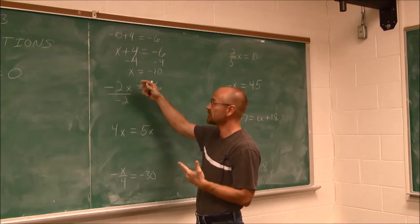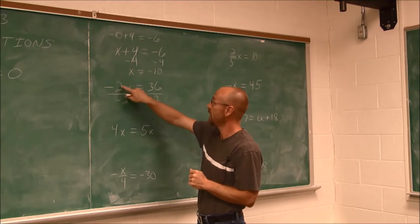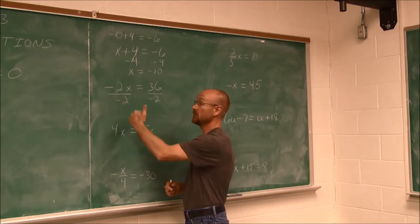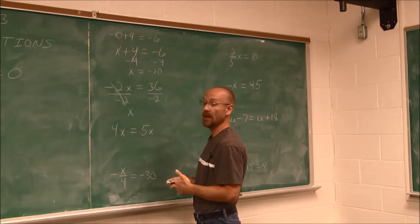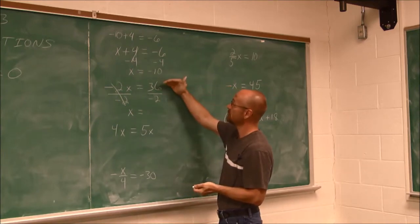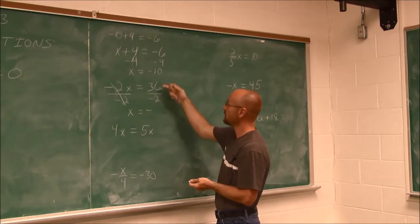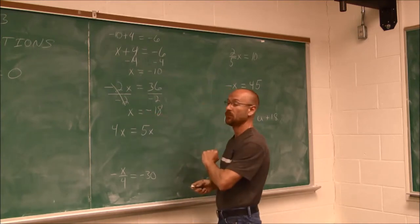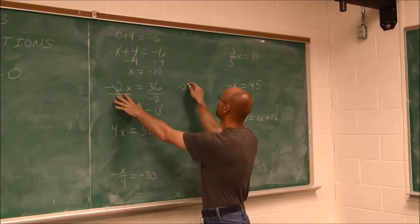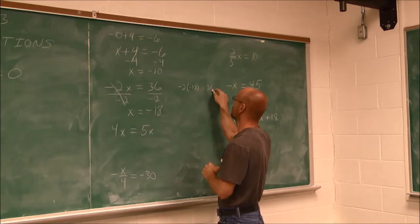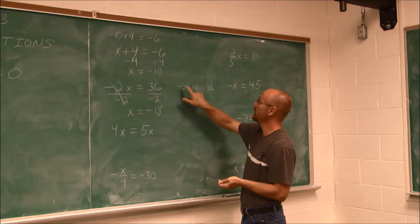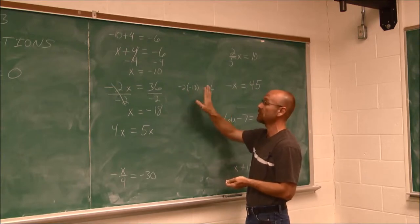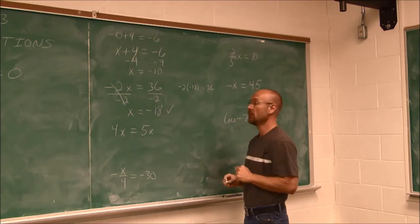Negative 2 over negative 2: a negative divided by a negative is positive, and 2 divided by 2 is 1, so this reduces to just x. On the other side, a positive over a negative is negative, and 36 divided by 2 is 18, so x equals negative 18. Checking: negative 2 times negative 18 — a negative times a negative is positive, giving 36. Positive 36 equals 36 — true statement. I know that's the right answer.